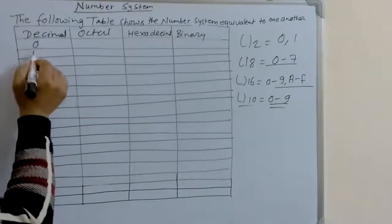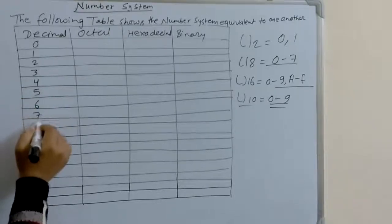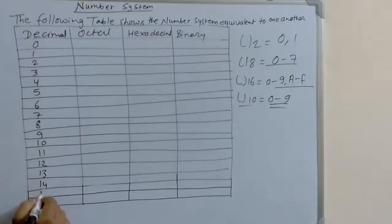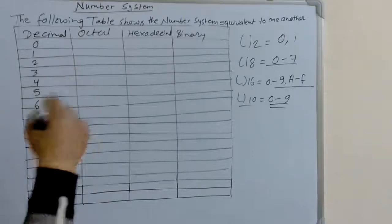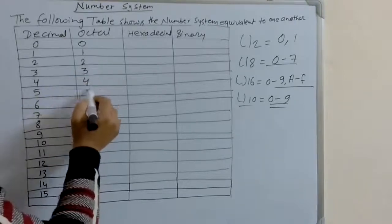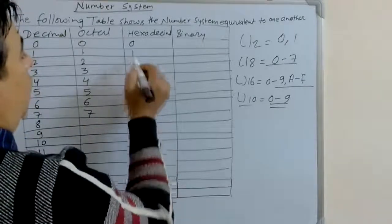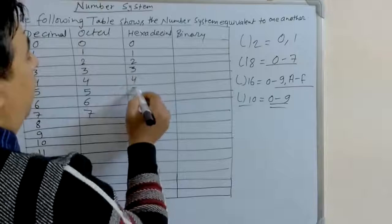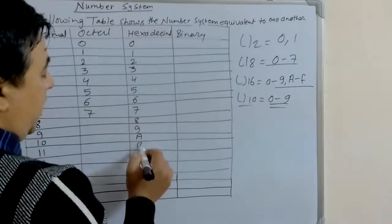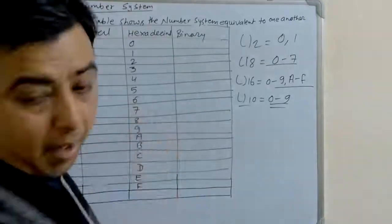In the table, the decimal values run from 0 through 15. The corresponding octal values run from 0 to 7 for the first eight entries, then continue as 8, 9, and the hexadecimal values for 10 through 15 are A, B, C, D, E, F respectively.